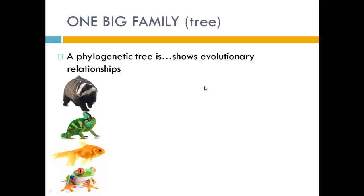We're going to begin today by looking at a phylogenetic tree. What I have here on the left are a badger, a lizard, a goldfish, and a frog — or in other words, a mammal, a reptile, a fish, and an amphibian. And what we're going to do is play a little game from Sesame Street called: which one does not look like the others?